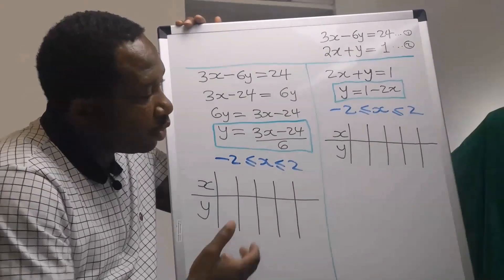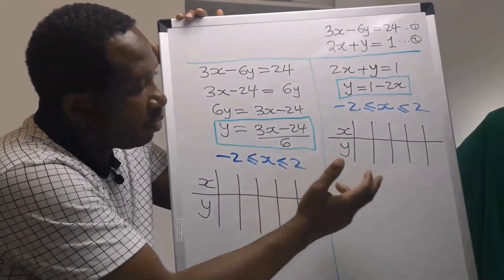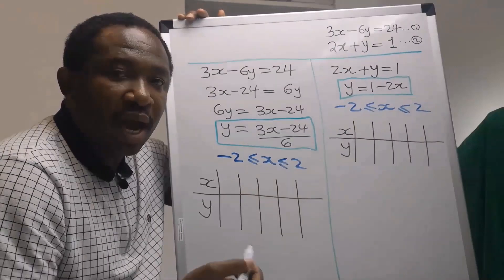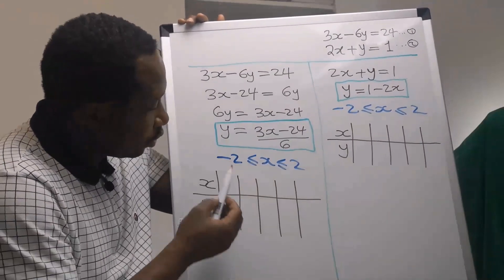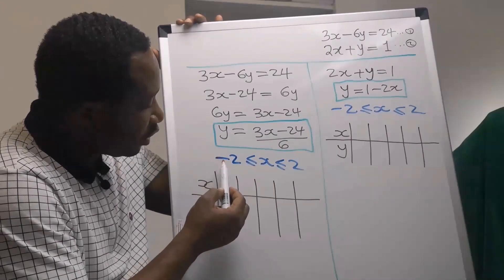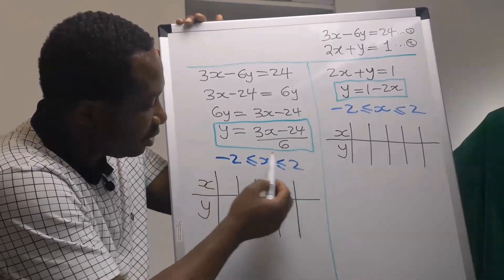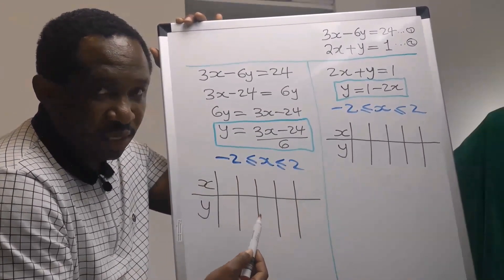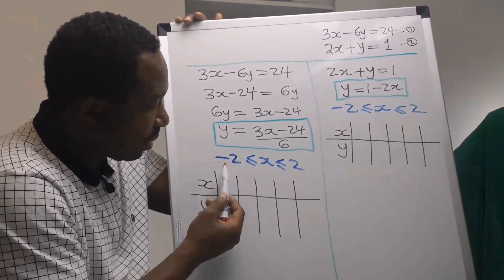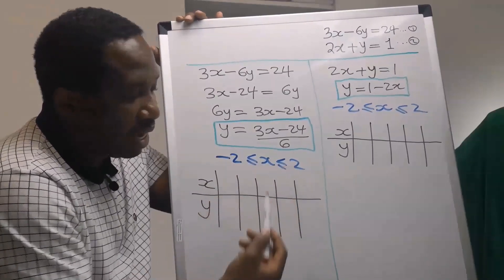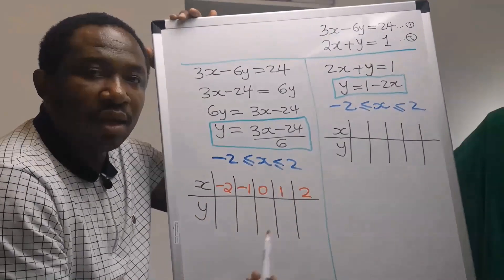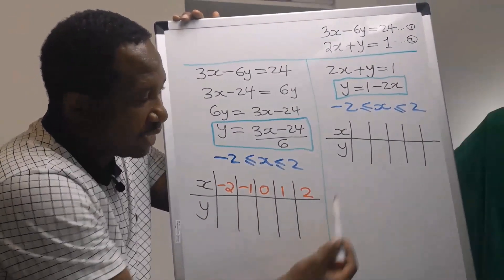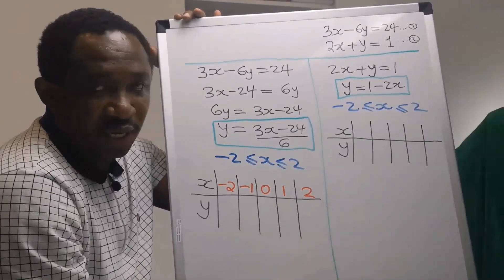Next, we are going to draw a table for both equations, considering the range of values we have chosen — here, between minus 2 and 2. I will do the same for the other table.